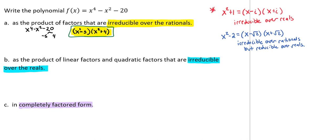Now, if we're trying to find the product of linear factors and quadratic factors that are irreducible over the reals, that allows us to then take that x^2 - 5 and our x^2 + 4 and go a little bit further.